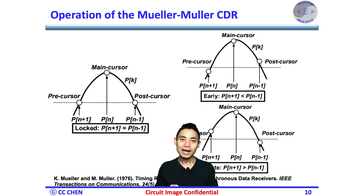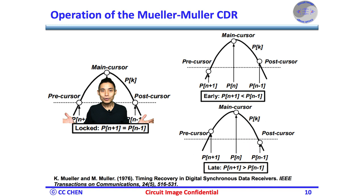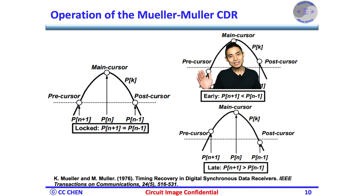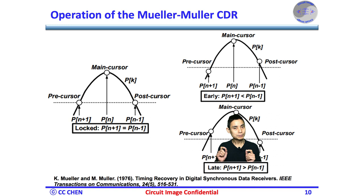Since the Müller-Müller CDR only takes one sample per bit, we can take advantage of the pulse response through the channel by equalizing the precursor ISI of the channel with the post-cursor ISI of the channel. All the data of the precursor, main cursor, and post-cursor are available through baud-rate sampling. If the pulse response is symmetric, the sampling point of the main cursor will be in the middle and at the best phase. If the precursor is smaller than the post-cursor, the clock is too early, and vice versa. The Müller-Müller CDR lock condition is simple and straightforward, though there are still a few variants of circuit implementation due to several impairments.